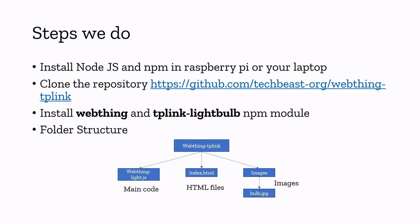So here are the steps we are going to do. First, we are going to install Node.js and npm on a Raspberry Pi or your laptop. You can use either — today I'm going to use my laptop. Second, we are going to clone the repository. I've already developed the code for you, so you can just clone it to your local machine, change the IP address of your light bulb, and you're ready to go. There are two dependencies: the web thing npm module and the TP-Link lightbulb npm module. We'll combine these two to control the TP-Link bulb from a simple web page.